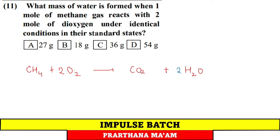Question 11: The reaction is balanced. 1 mole of methane reacts with 2 moles of dioxygen. 2 moles of water are produced, which is 36 grams. Option C.